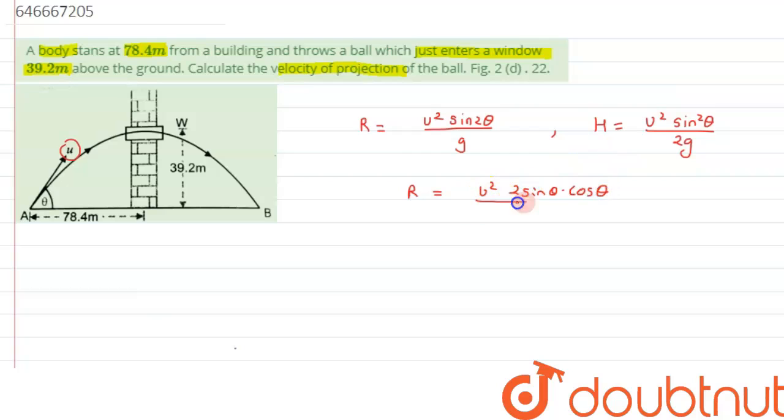If we multiply 2 above and 2 below, and also with sine theta in the numerator and sine theta in the denominator, so what we are going to get is, we can say this can be written as 4 times...